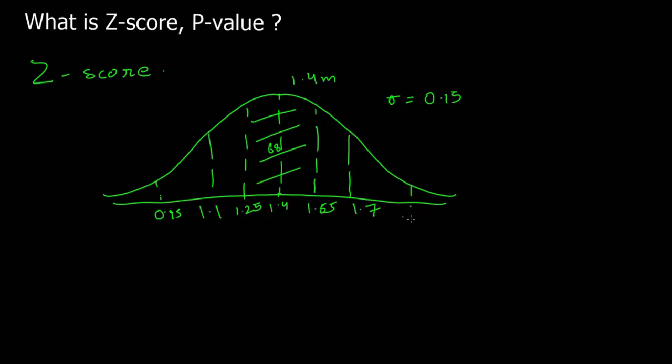And to the right, it's 1.85. And the whole of this under these three standard deviations, we had 99.7% students and 0.3% are those more than three standard deviations.